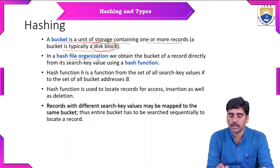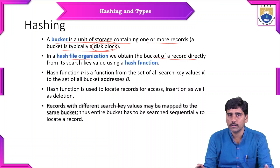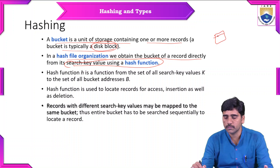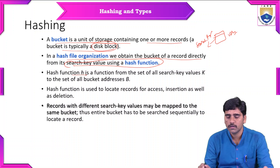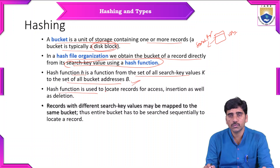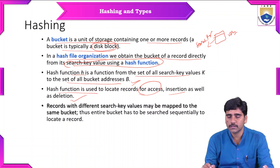In a hash file organization, we obtain the bucket of records directly from its search key value using a hash function. Buckets are associated with search key values. The hash function h is a function from the set of all search key values K to the set of all bucket addresses B. The hash function is used to locate the records for access, insertion, as well as deletion.